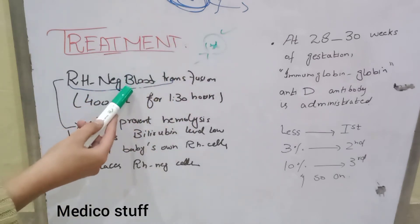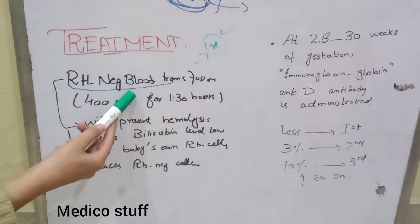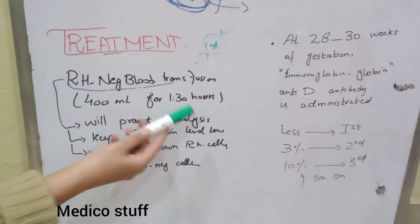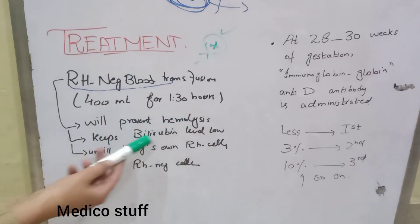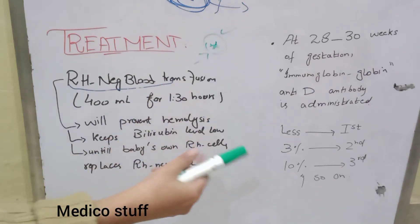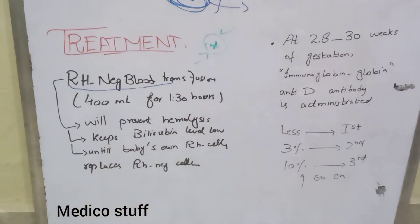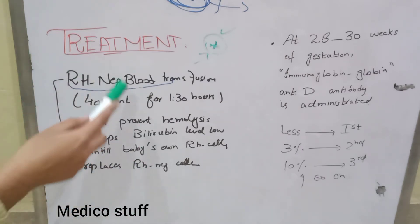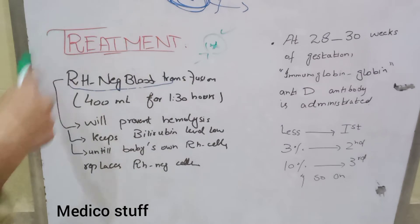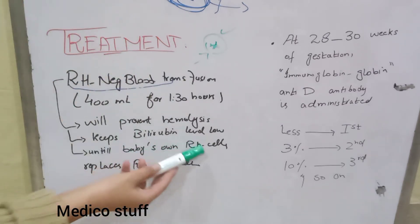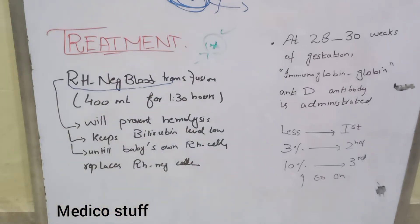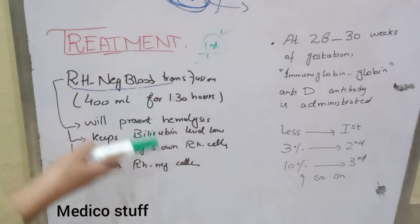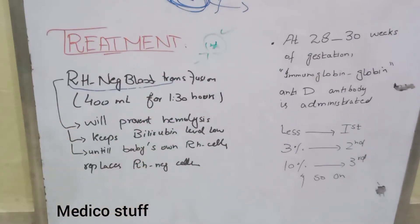The mother's antibodies will not cause lysis of RH negative RBCs. When there is no hemolysis, there will be a low bilirubin level, which decreases the risk of kernicterus and permanent mental impairment. After the RH negative blood is transfused and continues inside the baby, after a few months the baby's own RH positive cells replace the RH negative cells, and the RH negative cells are disposed of.